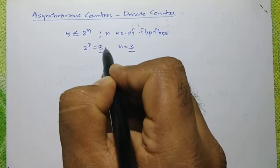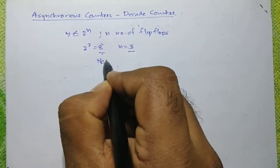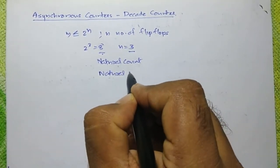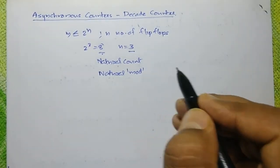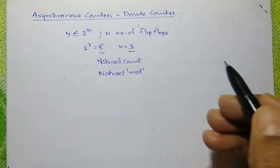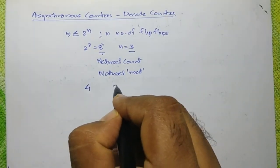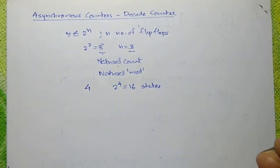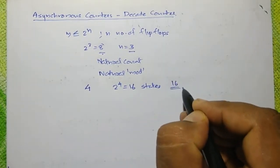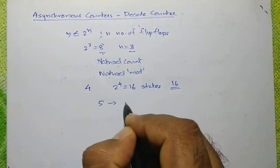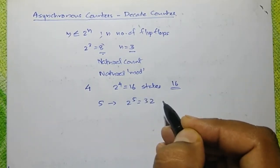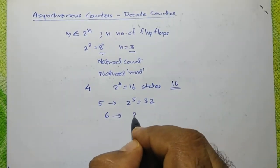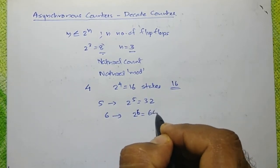In other words, 8 is the natural count or natural mode of this counter with 3 flip-flops. If we have 4 flip-flops, then we can count up to 2 raise to 4 equal to 16 states. Or the natural mode of the counter with 4 flip-flops is 16. If we use 5 flip-flops, 2 raise to 5 equal to 32 is the natural mode. For 6 flip-flops, the natural mode is 2 raise to 6 equal to 64, and so on.